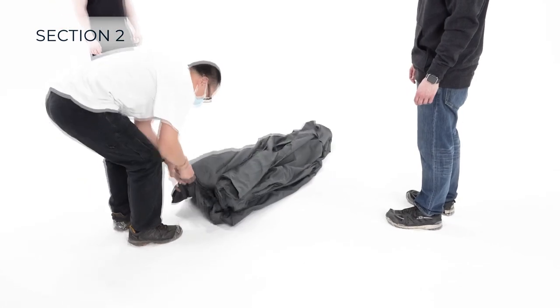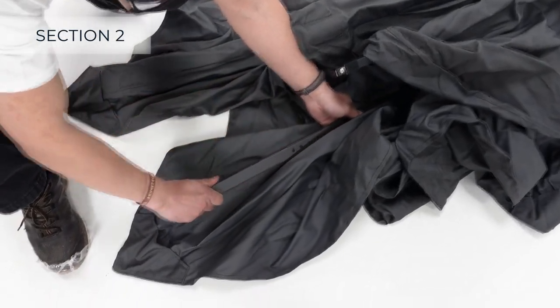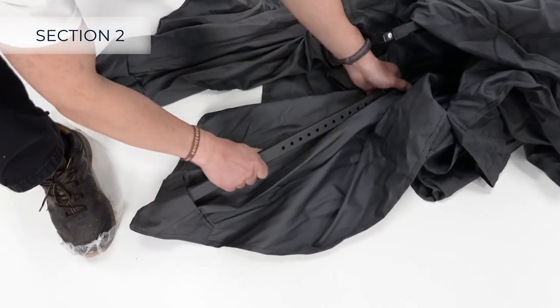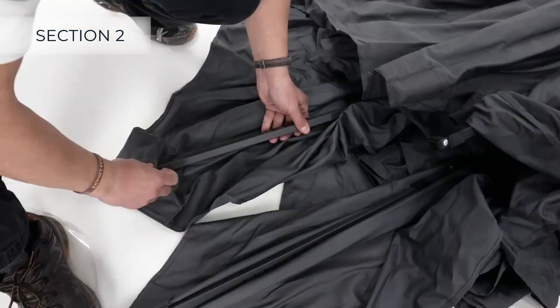For opening up the umbrella top, lay it on the ground and extend two of its arms into the fabric corners. Extend the arms until you hear an audible click to ensure that it's locked in place.